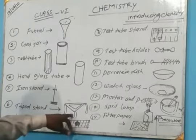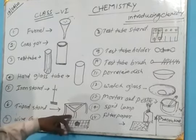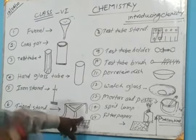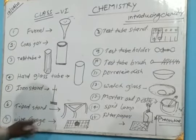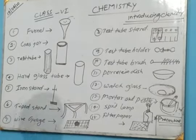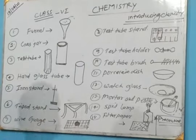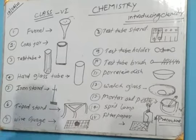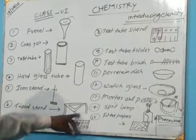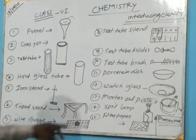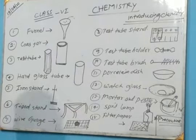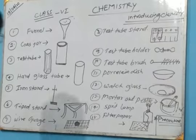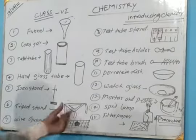We are looking at a stand that has three legs. Due to three legs, we call it a tripod, that means three legs. Where is it used? It is used for heating. It is just like a chulla which is used at home, but it is a chulla which is used in the laboratory.